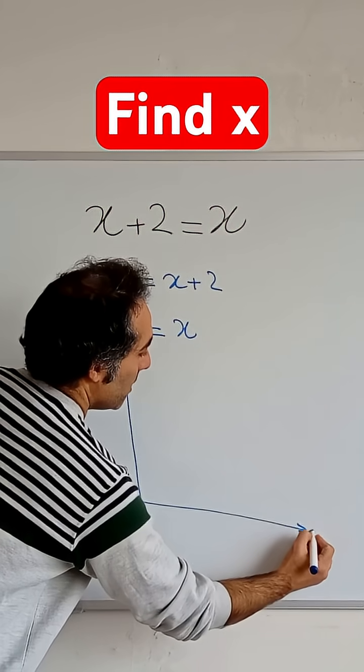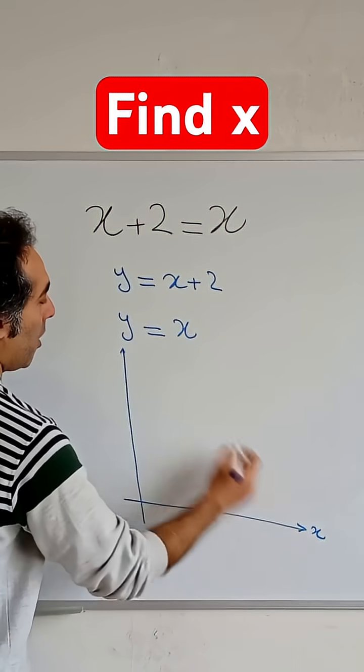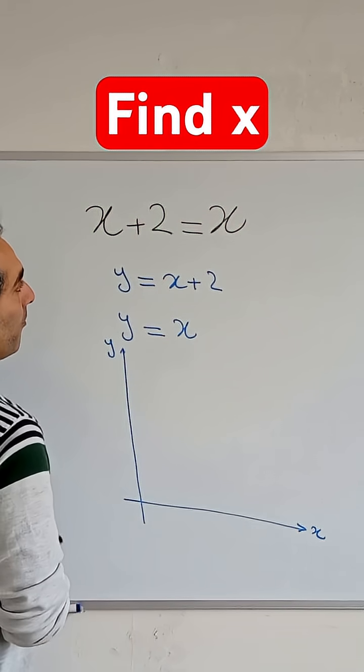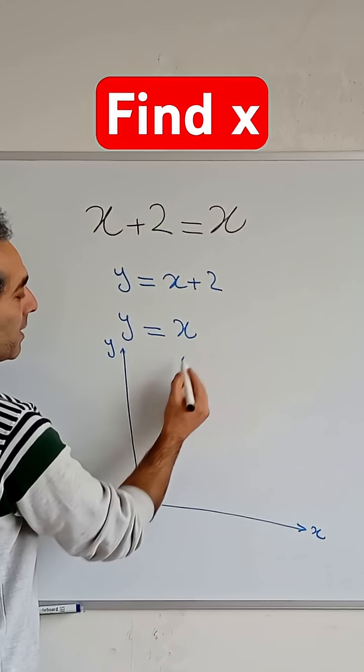On a y-x diagram, x is horizontal and y is vertical. y = x is exactly a straight line in the middle of this x and y axis.